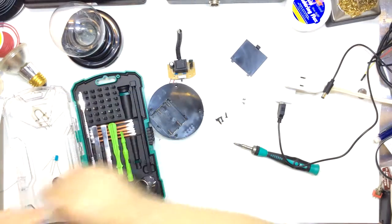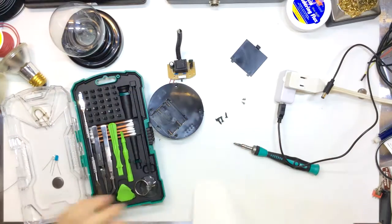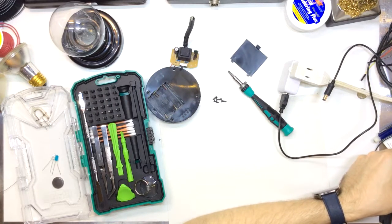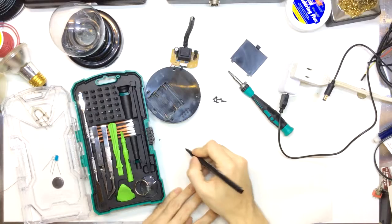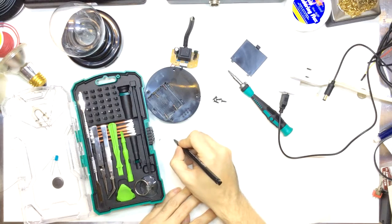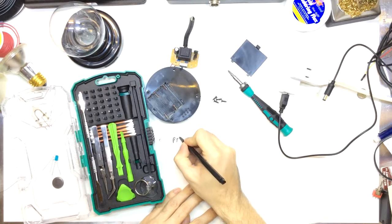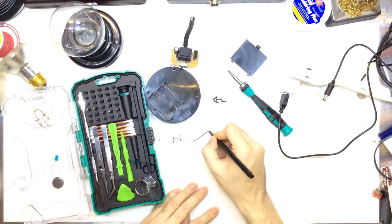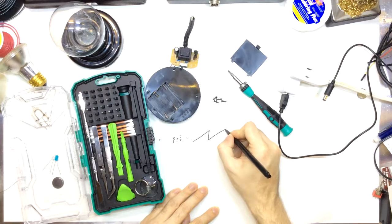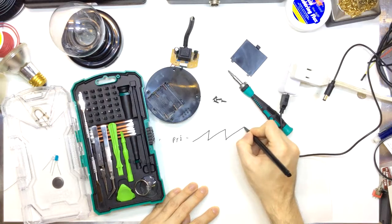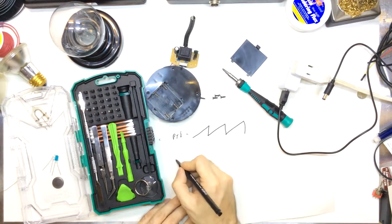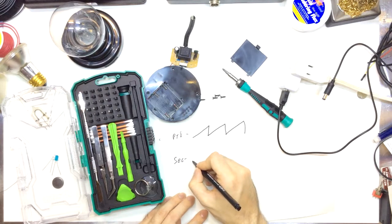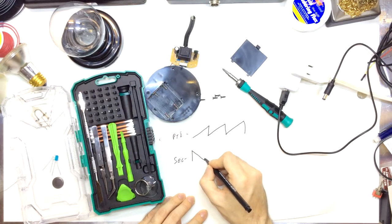And so what happens is you get an oscillating magnetic field that creates two sawtooth waves. In the primary you get a waveform that looks like this. And then, in the secondary you get a waveform that looks like this.